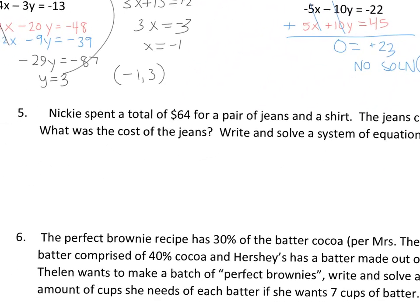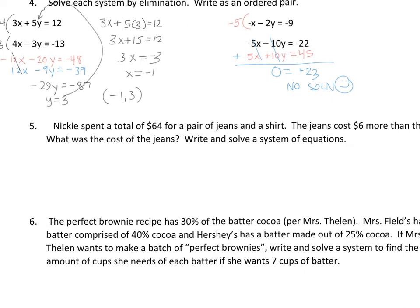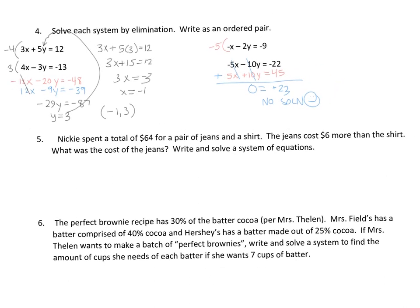And then a word problem. Nikki spent a total of $64 for a pair of jeans and a shirt. The jeans cost $6 more than the shirt. What was the cost of the jeans? Because that's going to be my variable. Write and solve the system of equations.